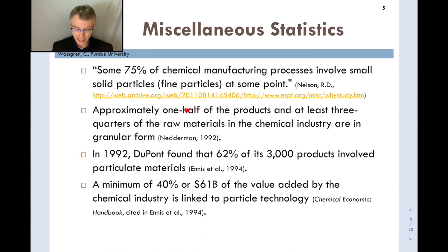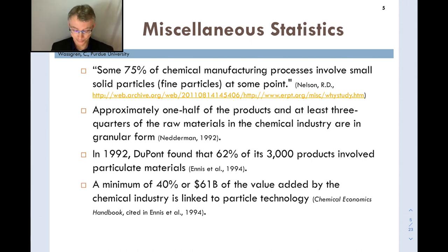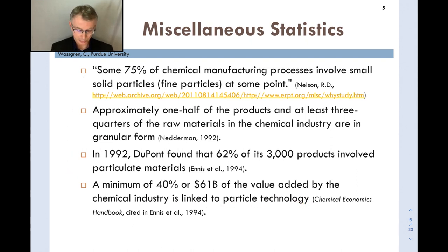Along the same vein, approximately one half of the products and at least three quarters of the raw materials in the chemical industry are in granular form. In 1992, DuPont found that 62% of its 3,000 products involved particulate materials — a very significant portion for such a large company. Furthermore, a minimum of 40%, or $61 billion, of the value added to the chemical industry is linked to particle technology.